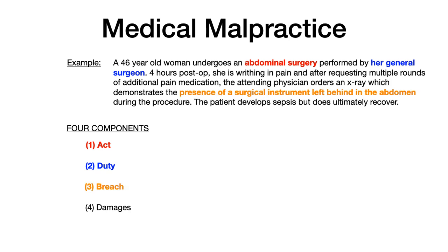The breach is that a surgical instrument was left behind in the abdomen. The definition of a breach is a deviation from the standard of care — what a reasonable physician would have done in similar circumstances. The question is: would a reasonable physician doing an abdominal surgery have left a surgical instrument in the abdomen? The answer is an obvious no, and therefore the breach is established as a deviation from the standard of care.